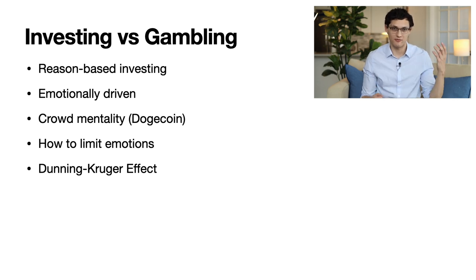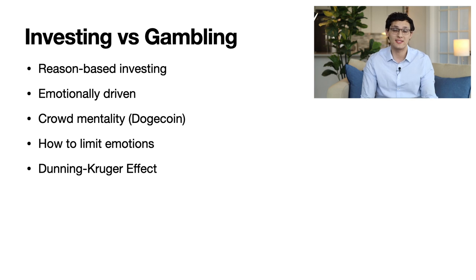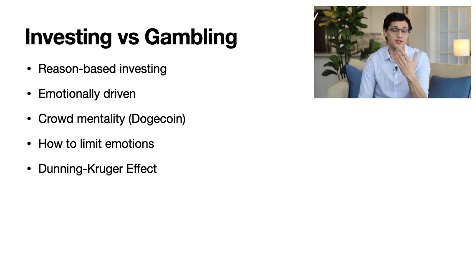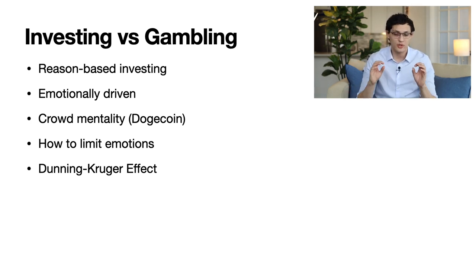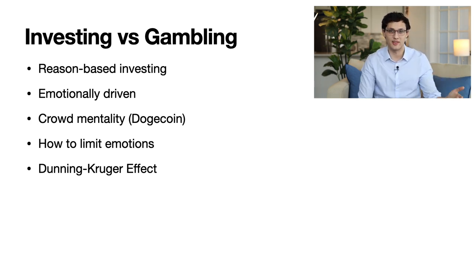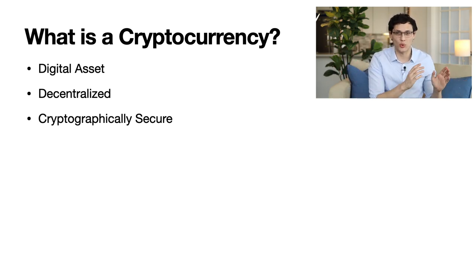The last thing we need to talk about when discussing investing versus gambling is the Dunning-Kruger effect — where people with limited knowledge tend to overestimate their knowledge. The problem is this can result in you taking on greater risks than you would otherwise, because you think you know all the downsides even though you don't. The only solution is to always try to stay humble, assume you could be wrong about any given investment, and remember that this also applies to other people who appear confident online.